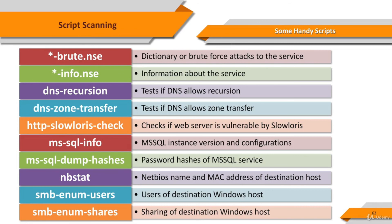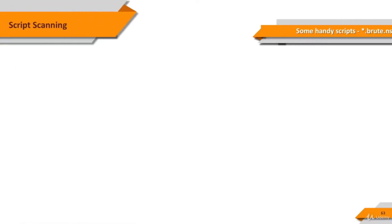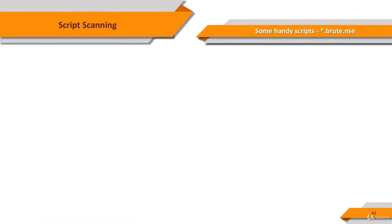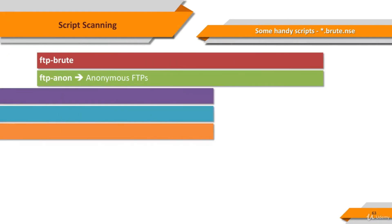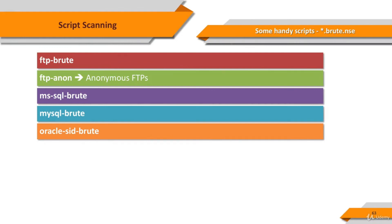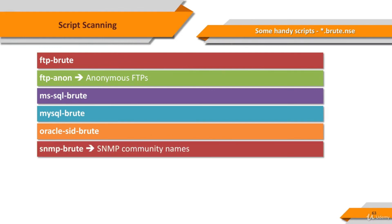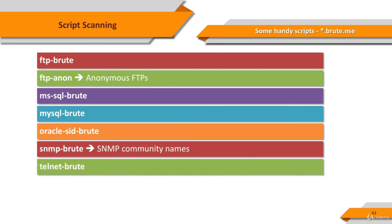You should try the pass-the-hash method to compromise systems, and the last three scripts will be very helpful for your pass-the-hash attacks. Here you see some useful brute force or dictionary attack scripts for FTP, databases such as MySQL, Oracle, or MS SQL, SNMP, Telnet, and more.